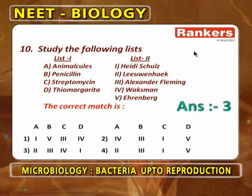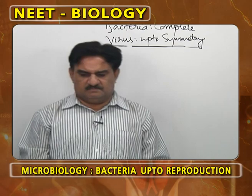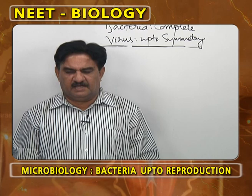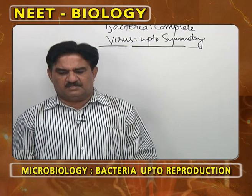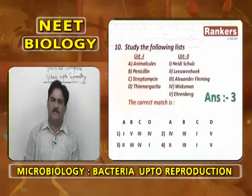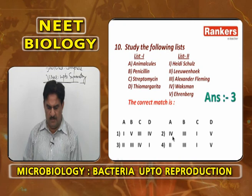Matching column: Animalcules — the term was coined by Leeuwenhoek, later converted to 'bacteria' by Ehrenberg. Penicillin was discovered by Alexander Fleming. Streptomycin is by Waksman. Thiomargarita was discovered by Heide Schulz. So the correct matching is: Animalcules-Leeuwenhoek, Penicillin-Alexander Fleming, Streptomycin-Waksman, Thiomargarita-Heide Schulz.